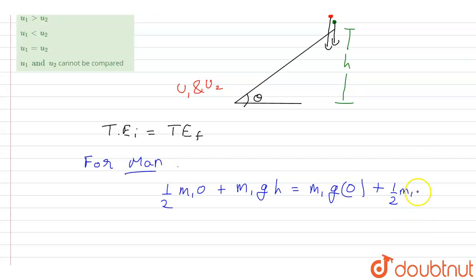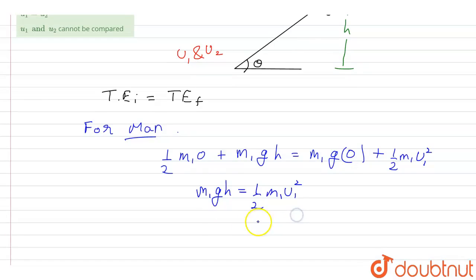That means u1 squared. So from here I can write m1 g h will be equal to half m1 u1 squared. That means mass and mass will get cancelled, and from here u1 will be equal to under root of 2 g h.